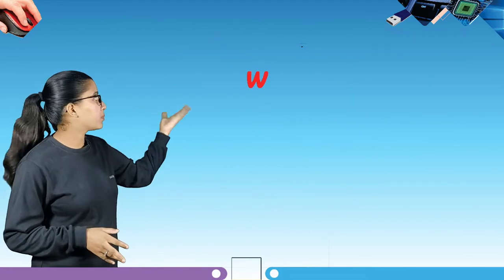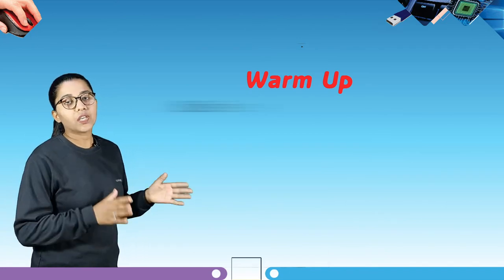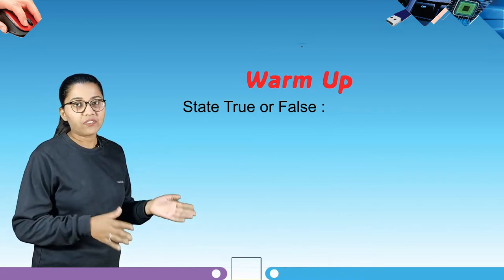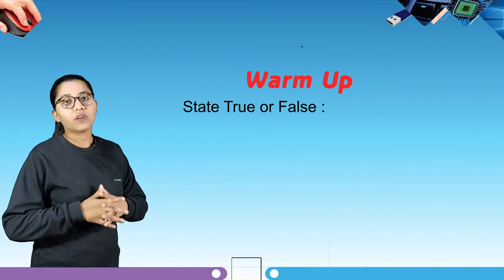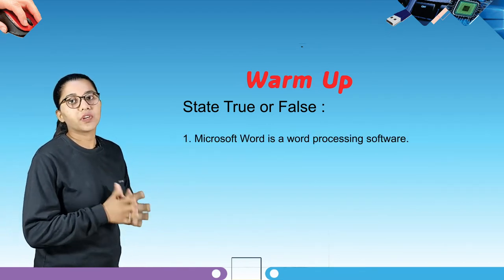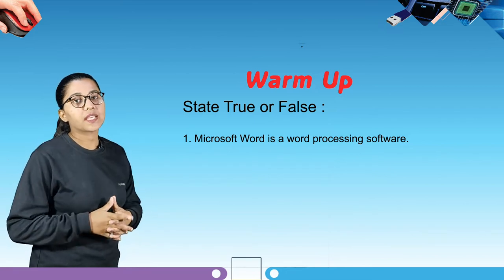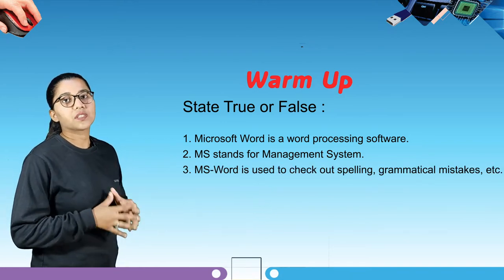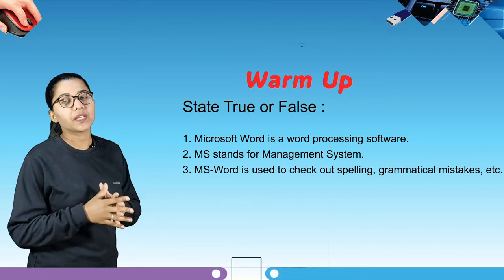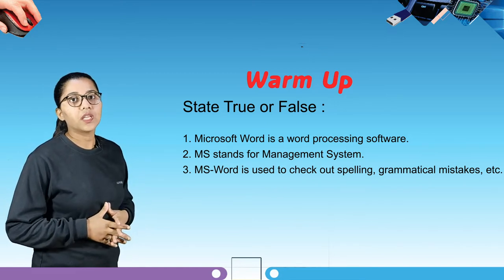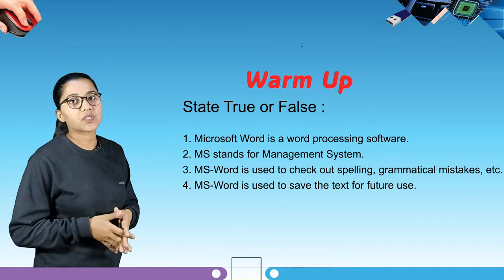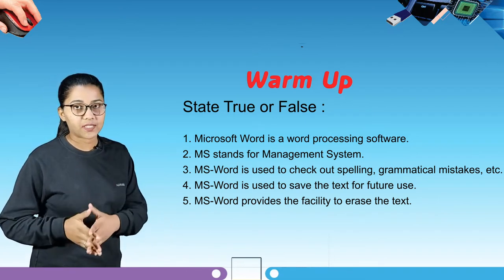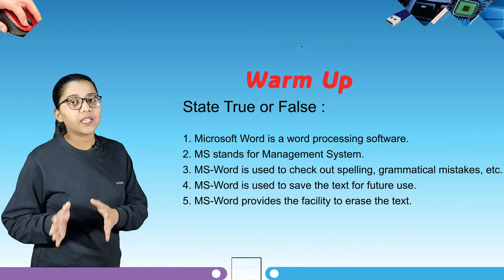So now students, we have some warm-up questions. First is state true or false — write T if you find the statement true and F if you find it false. First: Microsoft Word is a word processing software. Second: MS stands for management system. Third: MS Word is used to check spellings, grammatical mistakes, and more. Fourth: MS Word is used to save the text for future use. Fifth: MS Word provides the facility to erase the text. Write F and T in the boxes.